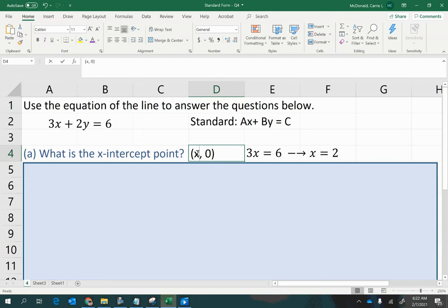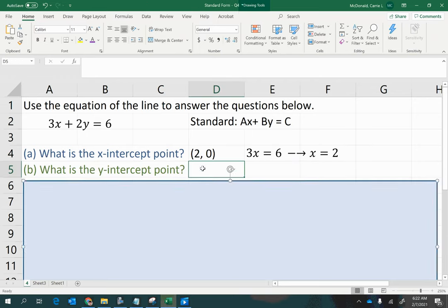So now I know that the x-coordinate is 2 for my x-intercept point. Likewise, when we find the y-intercept, we are going to be looking for a location on the y-axis, which is currently unknown, but we do know that everywhere you go on the y-axis, x is always going to be 0.